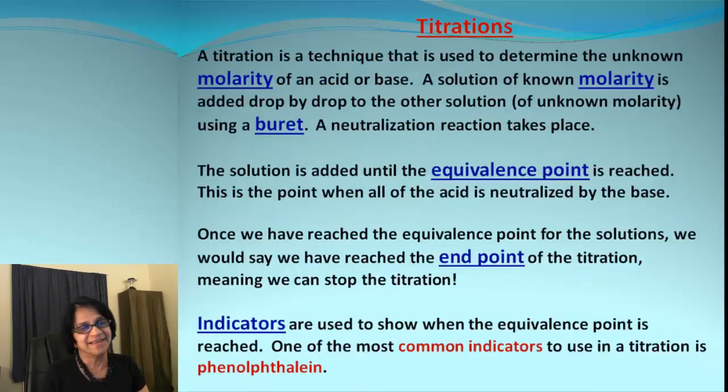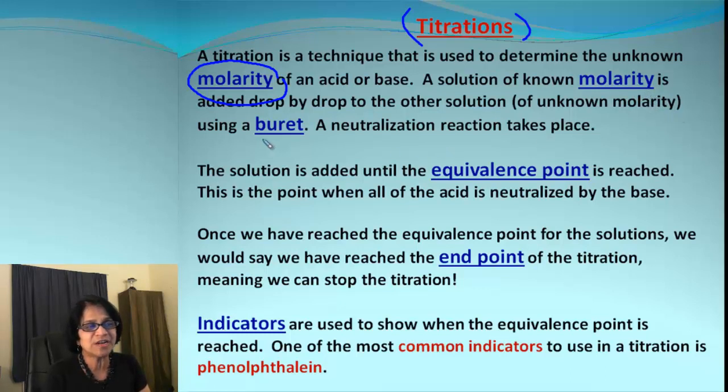Now what do we mean by titrations? Titration is an experimental process in which we mix acid and base until it becomes neutral. The main purpose is to find out the molarity of unknown acid or base. We take a solution of known molarity and the other one is unknown. We also use equipment called a burette, and we keep adding the other substance.